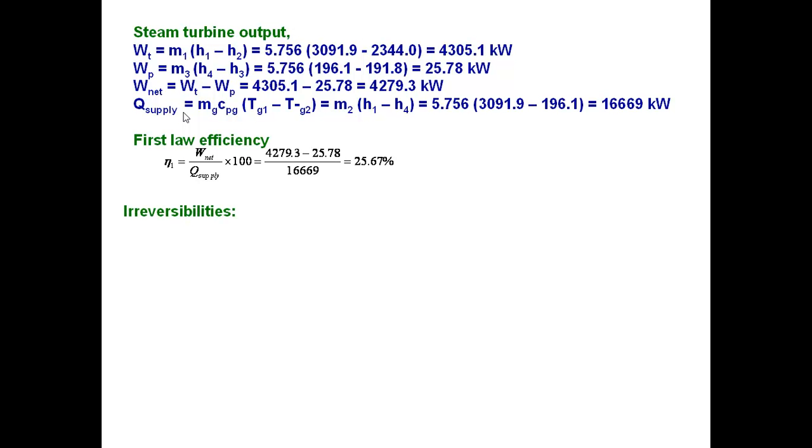Coming to the estimation of second law efficiency of steam Rankine cycle, first of all, we need to determine the irreversibilities associated in each and every component of the Rankine cycle. That is the first one is turbine, condenser, pump and the heat recovery steam generator.